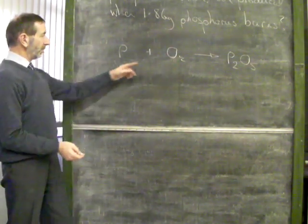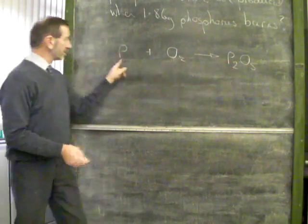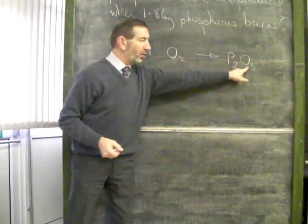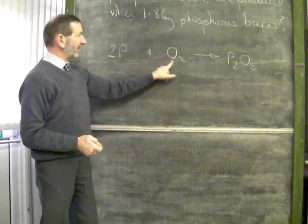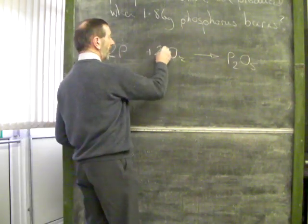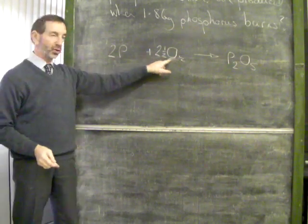Let's balance this. If we end with 2 phosphorus, we must begin with 2 phosphorus. If we end with 5 oxygens, we must begin with 5 oxygens. By multiplying by 2 and a half, it starts with a total of 5 oxygens.